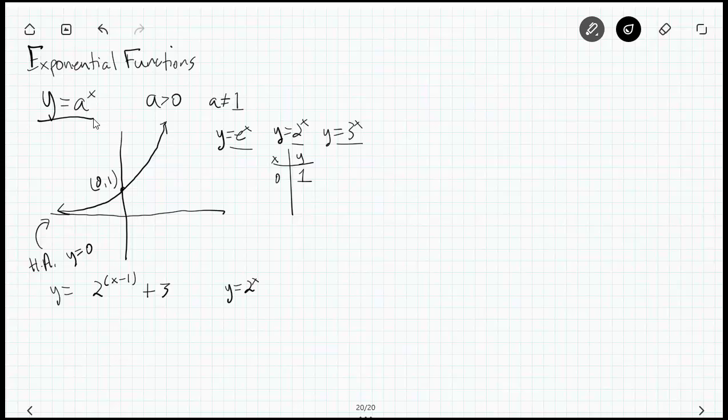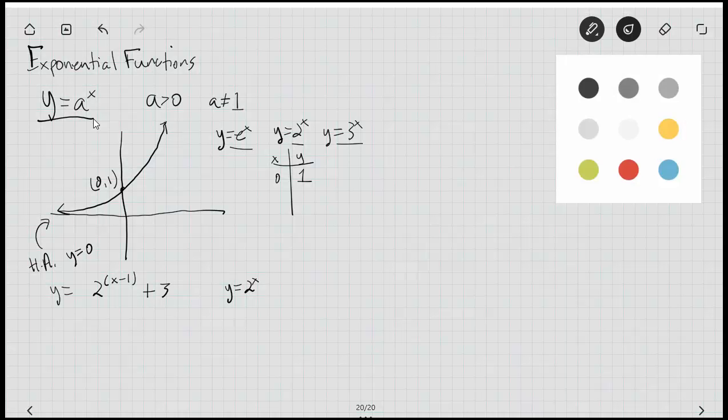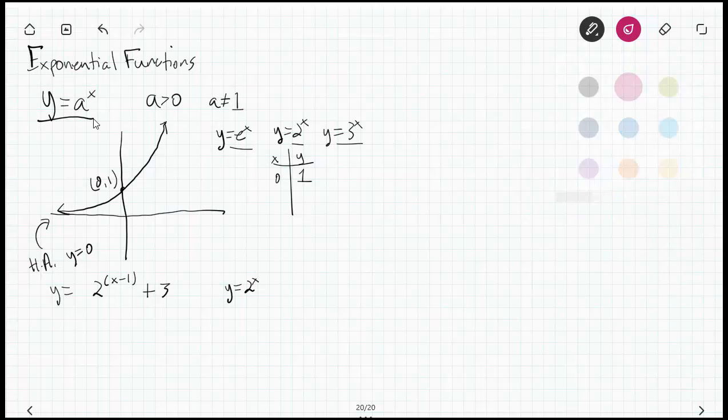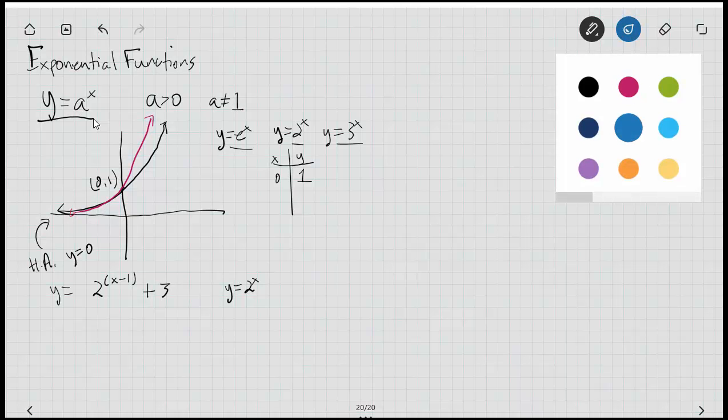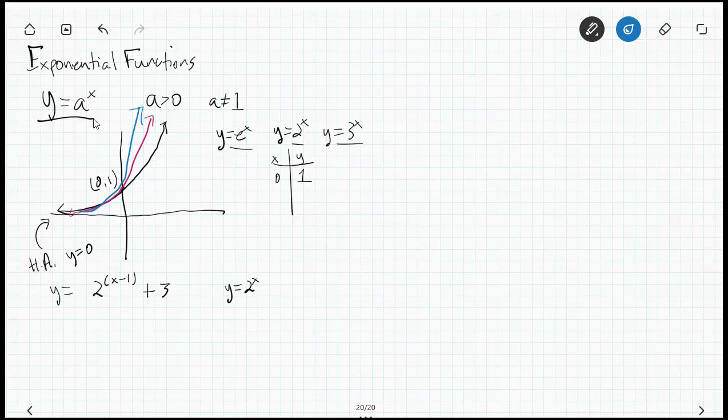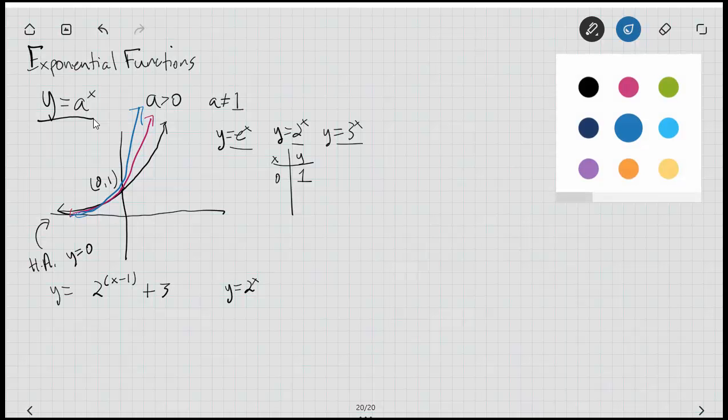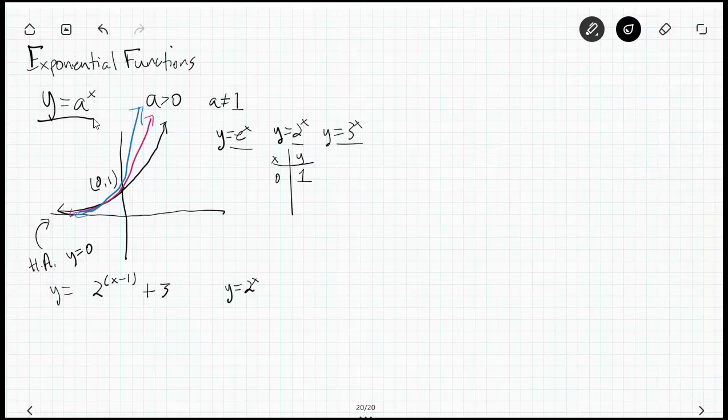So let's see, I think I can change the color of this bad boy. So if it were 3 to the x, just real quick, it would look something more like that. If it were 10 to the x, it would be even more stark—it would go up that way. Okay, let's get back to my black pen so I can get some work done.